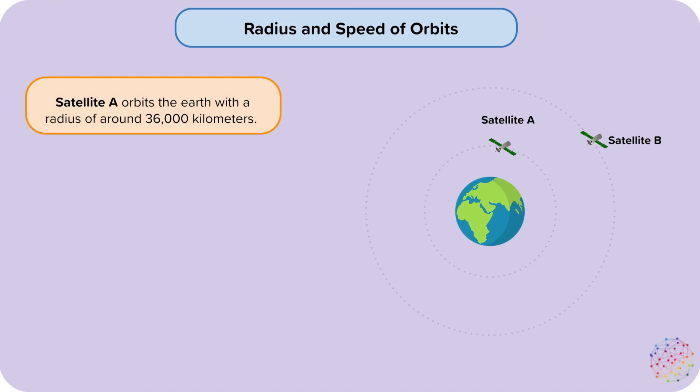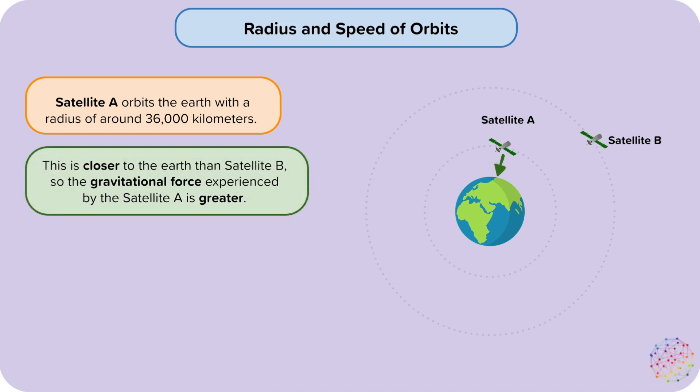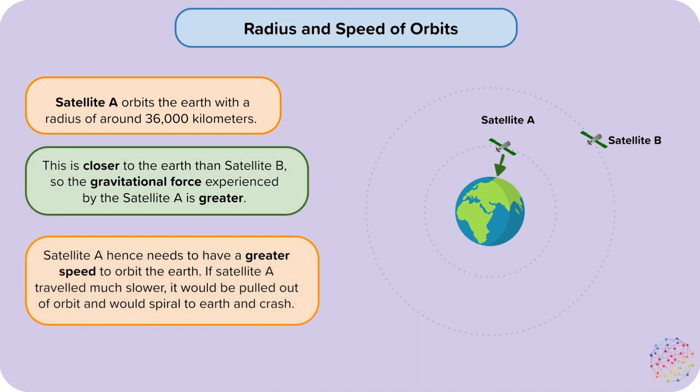Satellite A orbits the Earth with a radius of around 36,000 kilometres. This is closer to the Earth than satellite B, so the gravitational force experienced by satellite A is greater. Satellite A hence needs to have a greater speed to orbit the Earth. If satellite A travelled much slower, it would be pulled out of orbit and would spiral towards the Earth and crash.